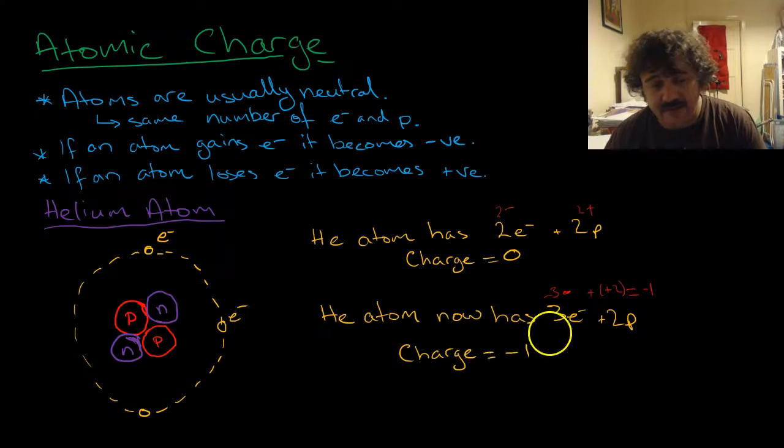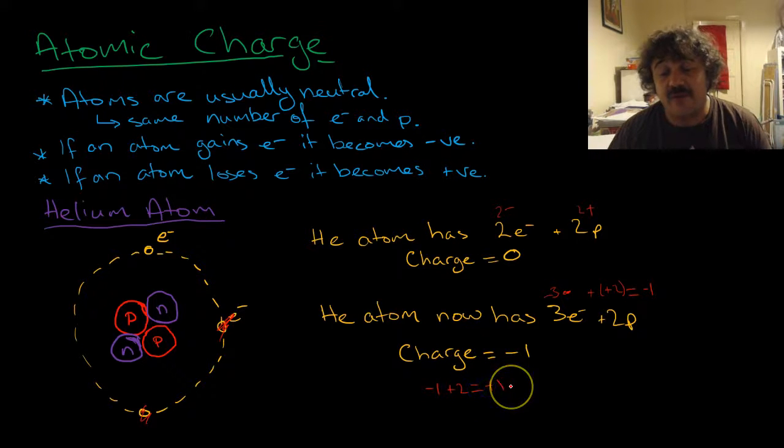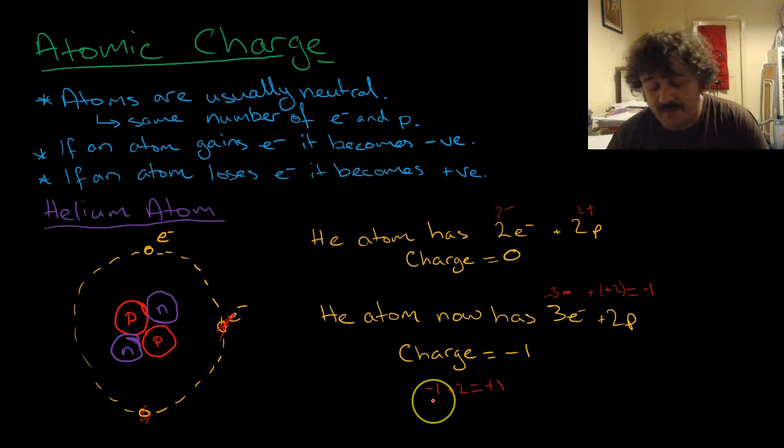If we take that electron away, and that one, so it's only got one. So it's lost an electron. We'll see that it has one minus charge, plus two protons. So two positives, which gives us a plus one charge. So if it gains electrons, it becomes a negative. If it loses electrons, it becomes positive.